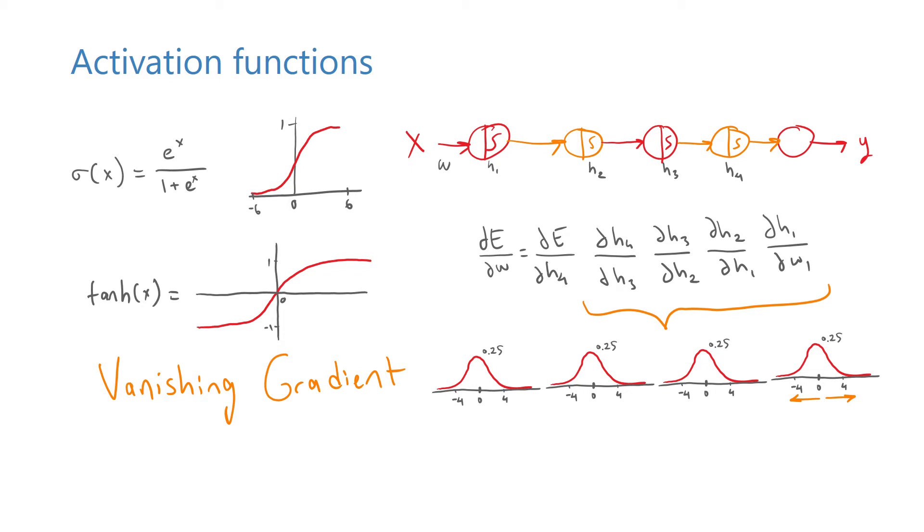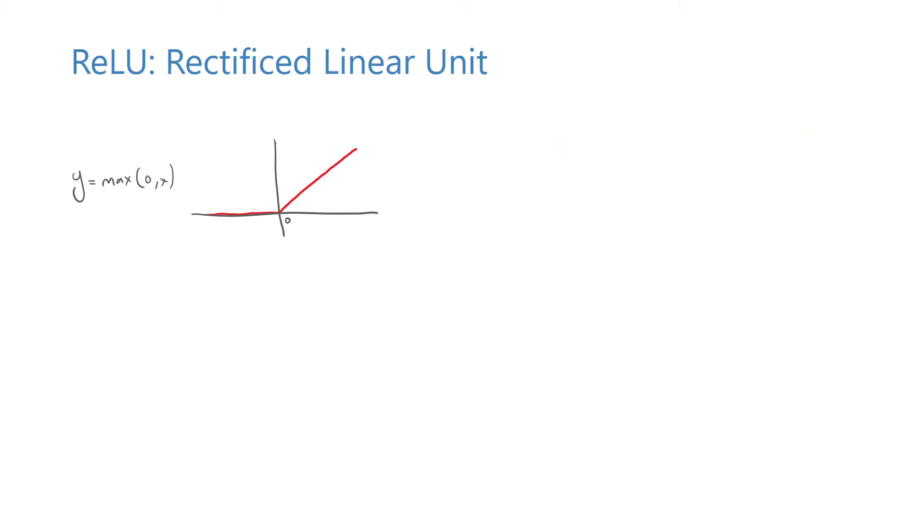So how do we fix this vanishing gradient problem, or at least alleviate it? A simple solution is to use a rectified linear unit activation. A rectified linear unit, or ReLU for short, is a clipped version of the linear activation, meaning that the output of the function is the same as the input if the input is positive and zero otherwise.